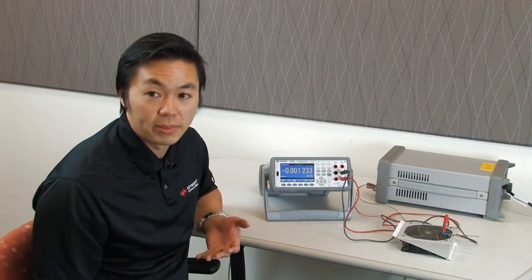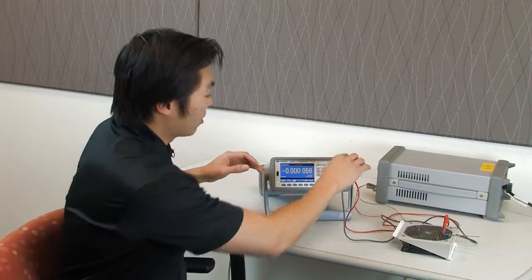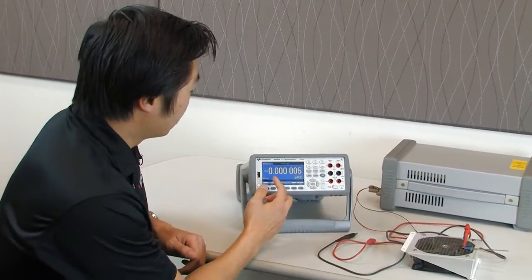So most other DMMs offer a 1 milliamp or a 10 milliamp range, but with the 1 microamp range, you can actually get down to the picoamp region.